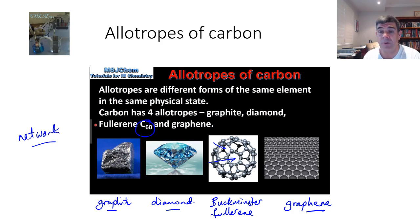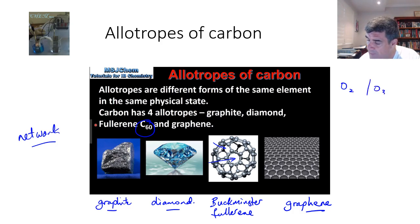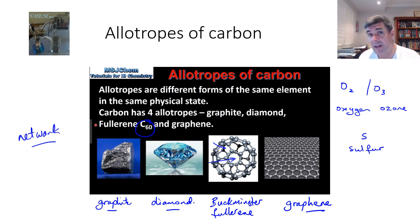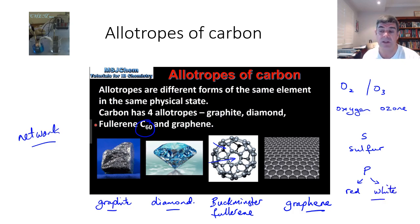A couple of other quick examples before we leave this: O2 and O3 are both allotropes of oxygen — O2 is oxygen, O3 is ozone. Another one to have a look at is sulfur, which has a number of different allotropes, both from a crystalline and an amorphous form. And we also have two different allotropes of phosphorus — red and white. There are a number of elements that do this, and we'll be having a look at a few of these in more detail during class.